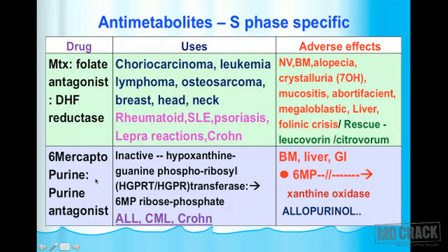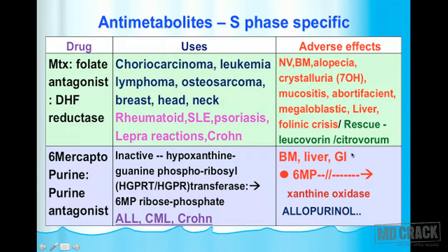6-Mercaptopurine (6-MP) is a purine antagonist. It is inactive when administered and must be activated by the enzyme hypoxanthine-guanine phosphoribosyl transferase (HGPRT), forming 6-MP ribose phosphate, which is the active form. Uses include ALL, CML, and Crohn's disease. Adverse effects include bone marrow toxicity, liver toxicity, and GI toxicity.